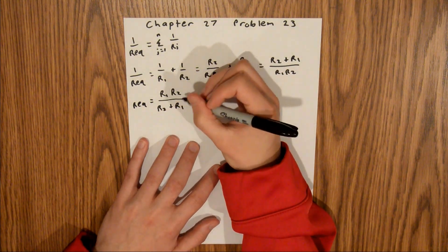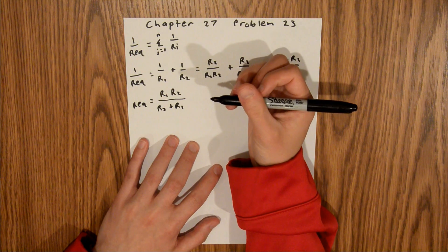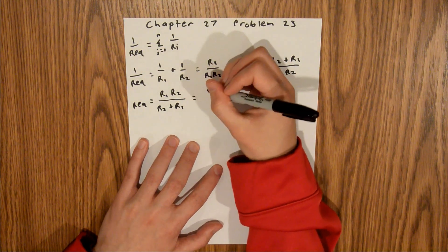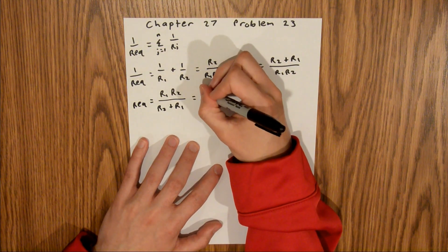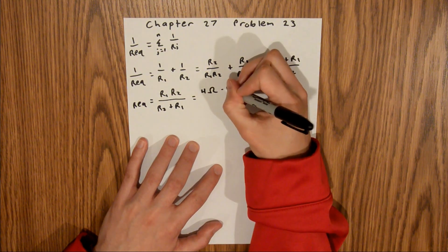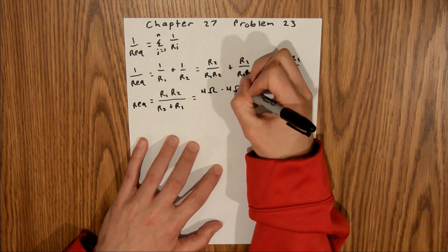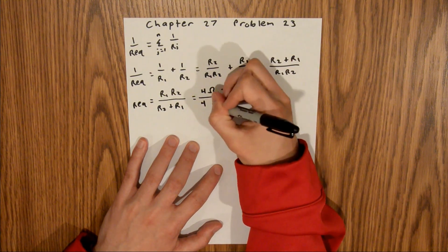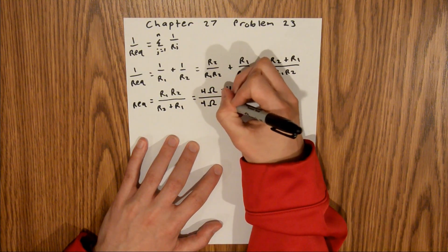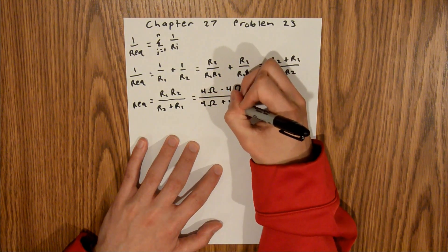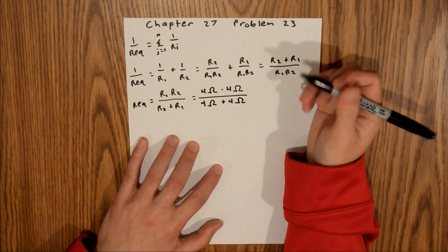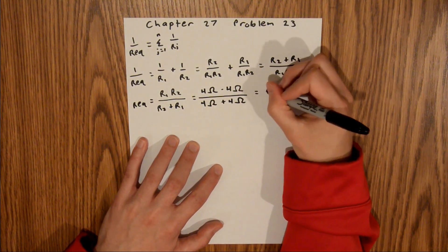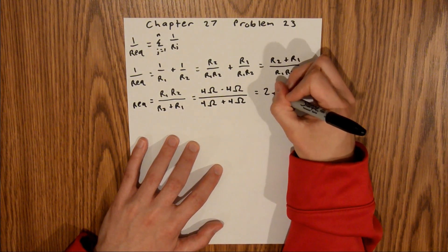We are given the resistances in the problem, so we can plug in: 4 ohms times 4 ohms over 4 ohms plus 4 ohms. If you plug that into a calculator, that equals 2 ohms.